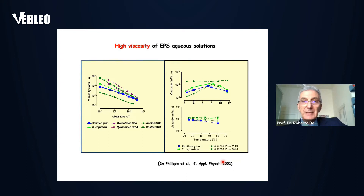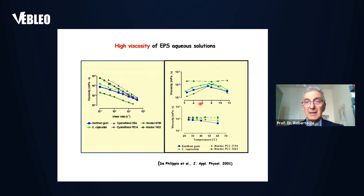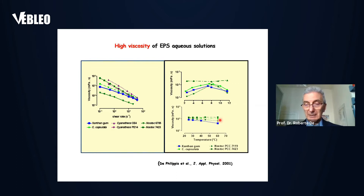Let's see some of the possible applications. The first is based on their very interesting rheological properties. They are capable of inducing very high viscosity in water. In this study, we compared the viscosity of different polymers extracted from different cyanobacteria with one of the most utilized polysaccharides produced by microorganisms, xanthan gum. In some cases the viscosity values are very interesting. Another very interesting property is the stability of viscosity over a large range of pH and resistance to temperature variation — both properties very interesting for applications such as food additives.